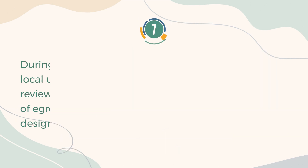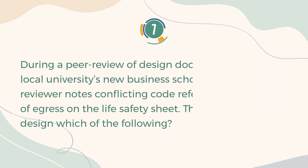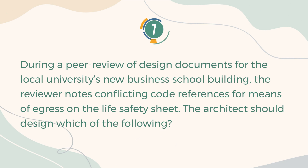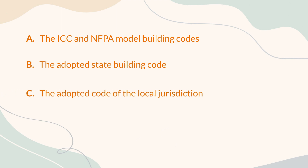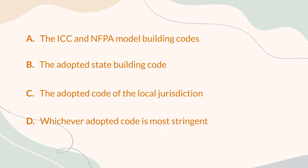Number 7. During a peer review of design documents for the local university's new business school building, the reviewer notes conflicting code references for means of egress on the life safety sheet. The architect should design to which of the following? A. The ICC and NFPA model building codes. B. The adopted state building code. C. The adopted code of the local jurisdiction. D. Whichever adopted code is most stringent.